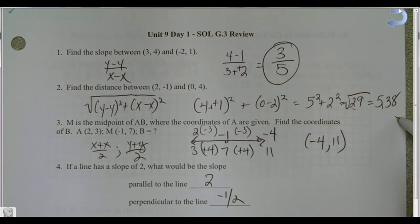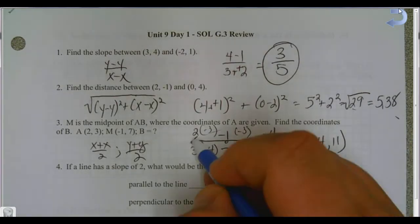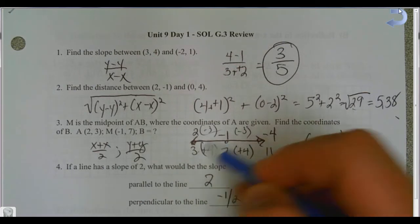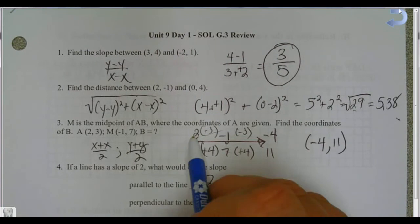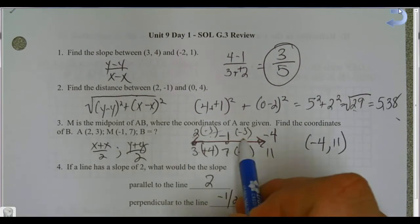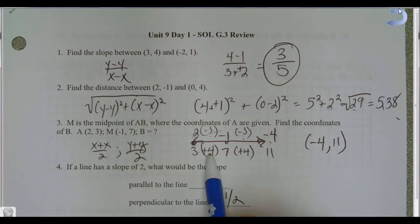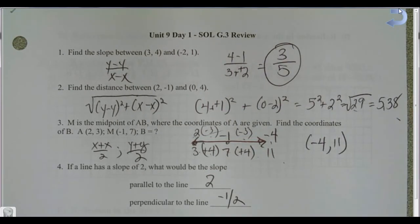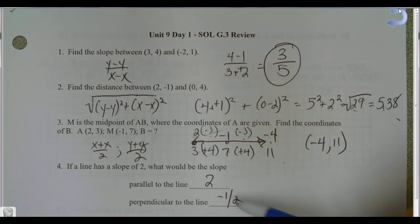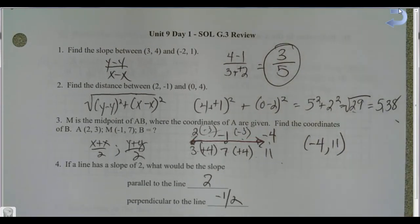So I got the square root of 29, which the calculator gives as 5.38. For the midpoint, I didn't use the formula — instead I created a pattern: from 2 to negative 1 is minus 3, so I did minus 3 more to get negative 4; from 3 to 7 is plus 4, so plus 4 more gives 11. So the coordinates of B are at negative 4, 11. Remember: parallel lines have the same slope; perpendicular lines have the opposite reciprocal slope.